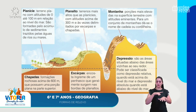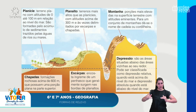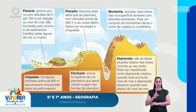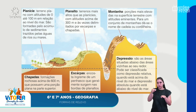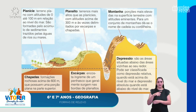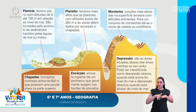As chapadas são formações rochosas acima de 600 metros que possuem uma porção plana na parte superior. Os planaltos altos são terrenos mais altos que as planícies, com altitudes acima de 300 metros, às vezes delimitados por escarpas. Escarpas são esses desníveis, encostas íngremes de um penhasco que geralmente surgem nas bordas do planalto, representando o desnível entre o nível mais baixo e o topo mais plano.